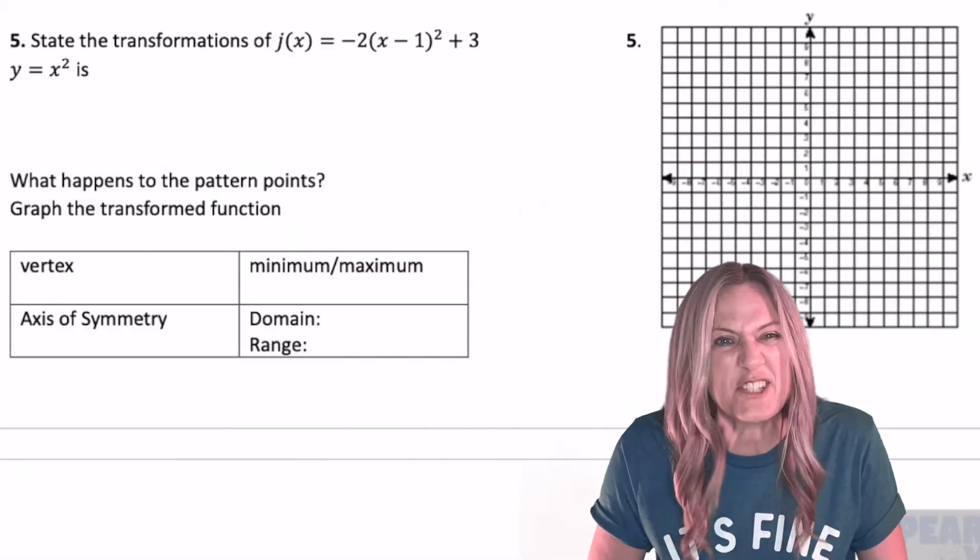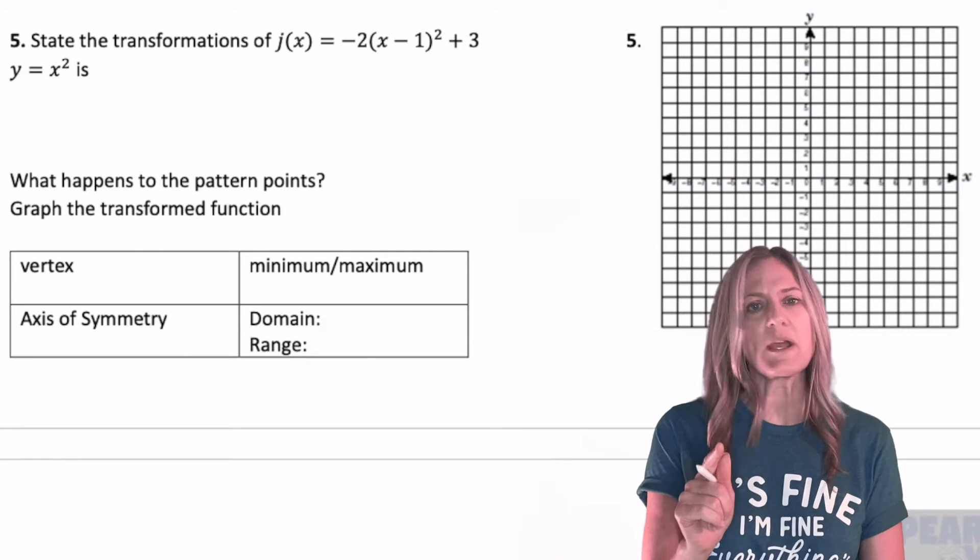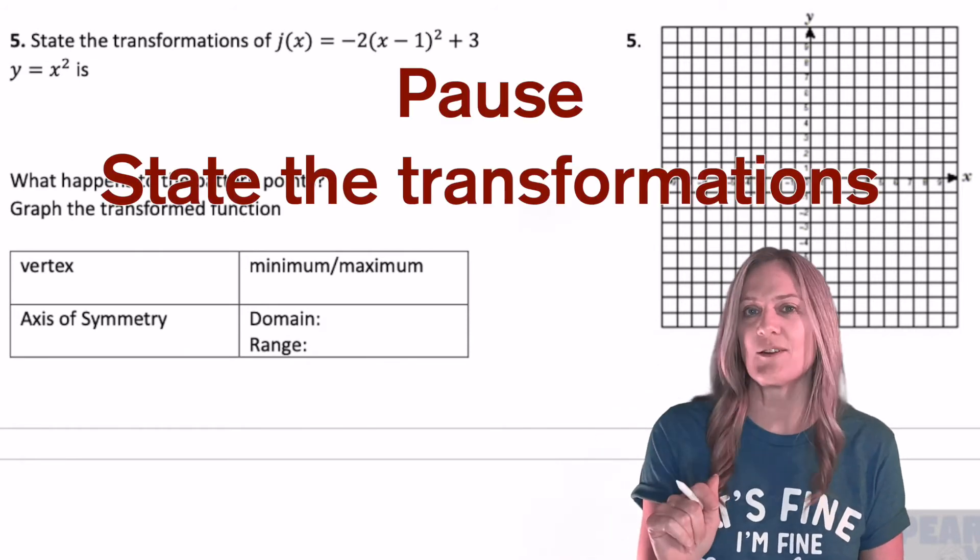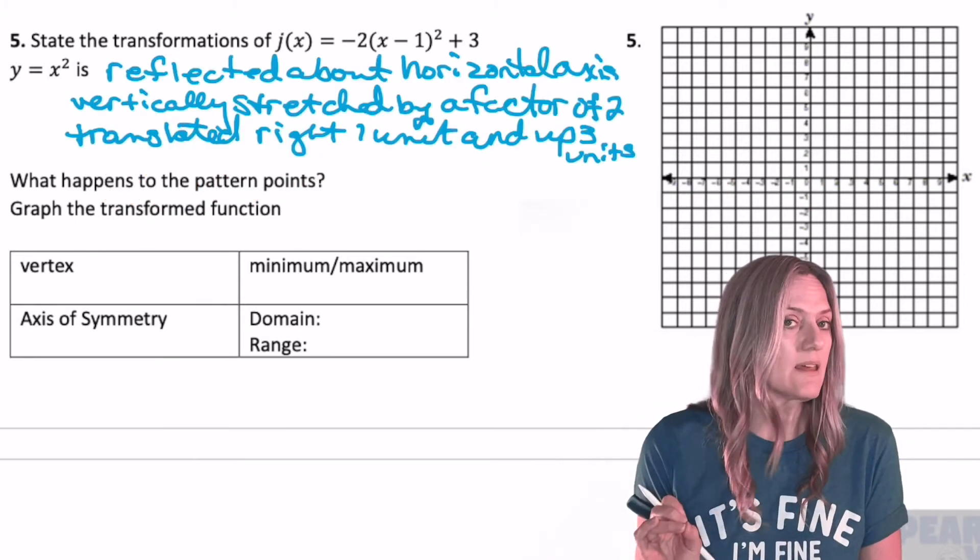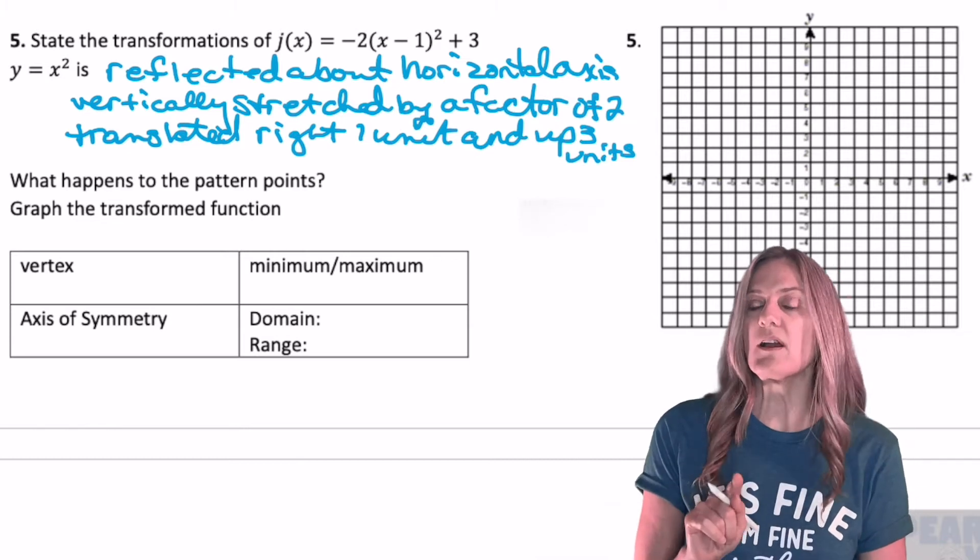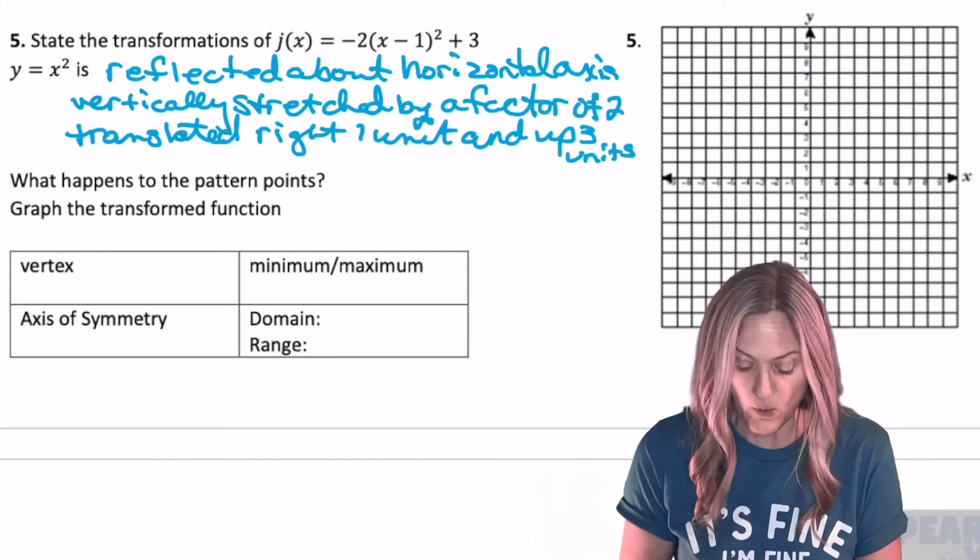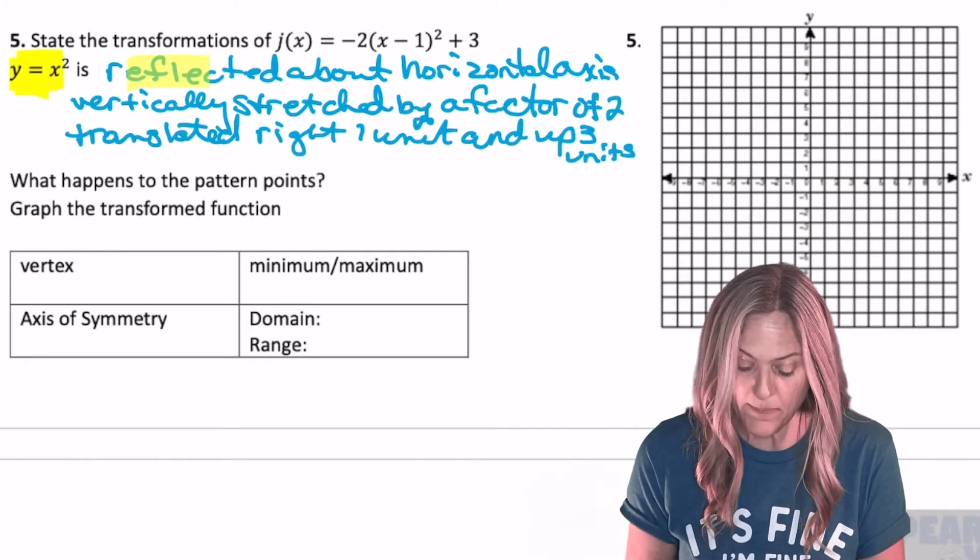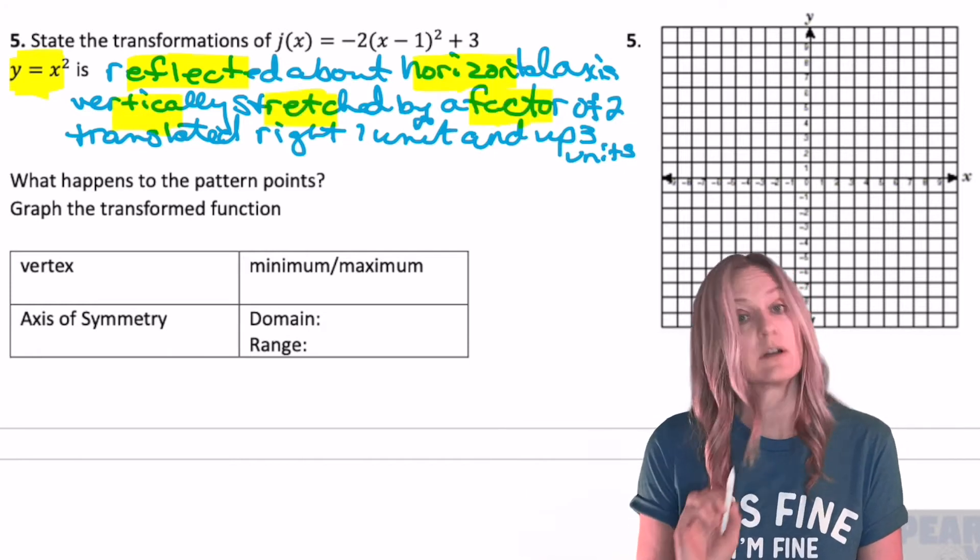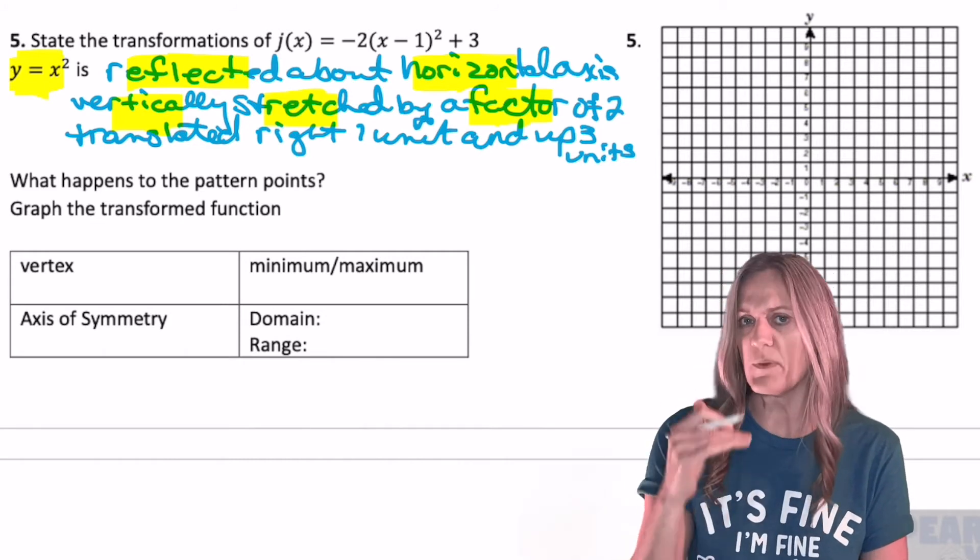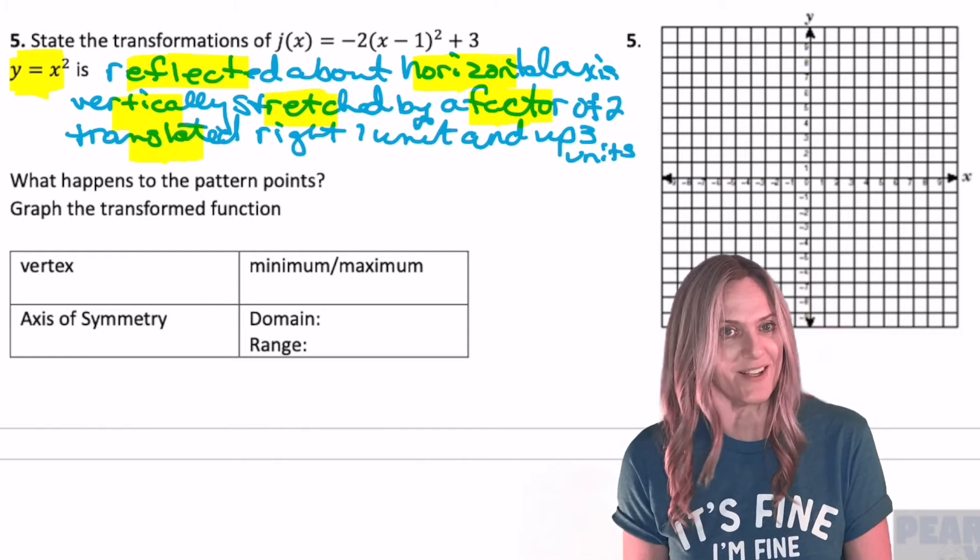Next, we have g of x. I'm just thinking you don't even need me on this. Go ahead, state the transformations to the parent function, and come back and check in with me if you got them all right. This is your own little pop quiz. Pause. Let's review the key things that you need to have in your verbal description. Remember, if I only read your verbal description, I should be able to write the function. So we have identified the parent function, reflected about the horizontal or x-axis, vertically stretched by a factor of two, and that factor is always positive because the negative meant the reflection, and then translated right one unit and up three units. Good job.